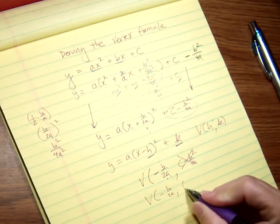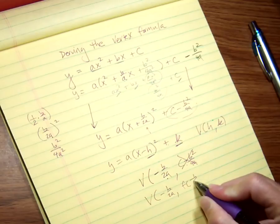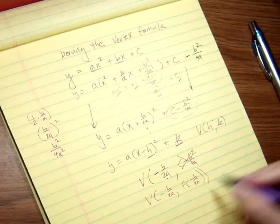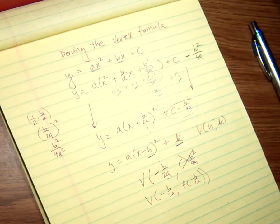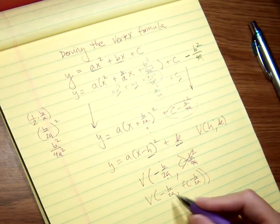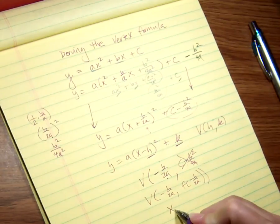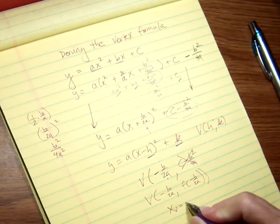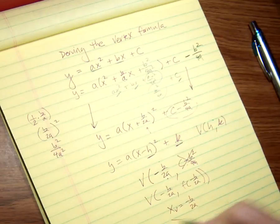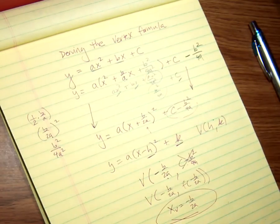So the way we write that is: negative B over 2A will give me my x value, and then I'll just plug it into the function to get the matching y value for my vertex. Another way to write this is: the x value of the vertex is -B/2A. So that's my equation.